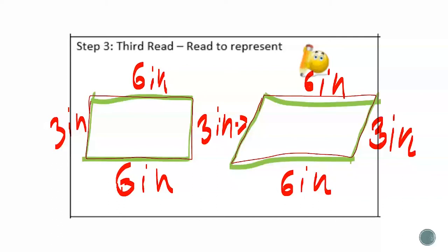I also see that they have four angles, but the angles are a little different. The quadrilateral on the left has four right angles. The quadrilateral on the right has two acute angles and two obtuse angles.